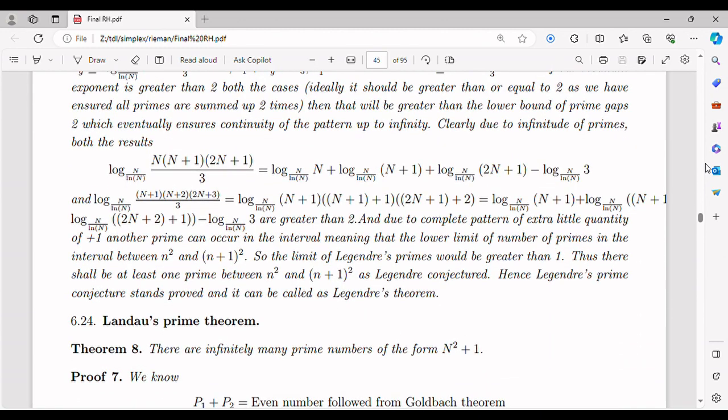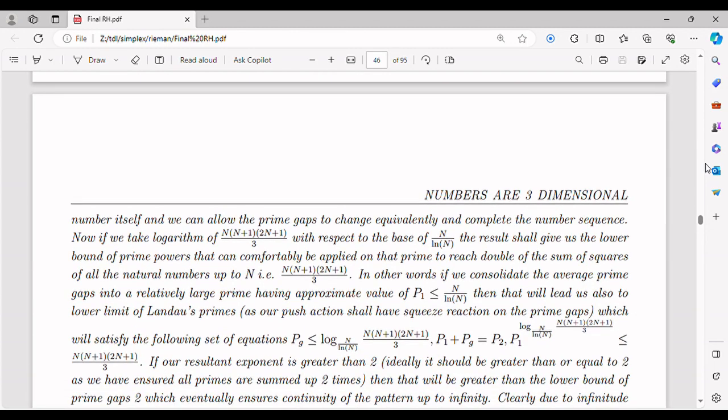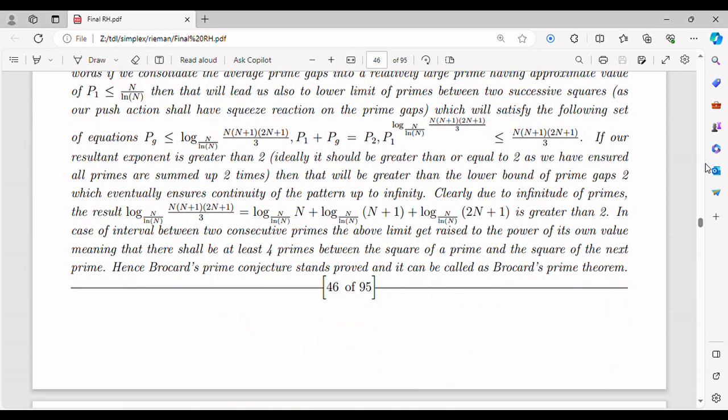Dark energy refers to the hypothetical form of energy that is believed to be responsible for the observed accelerated expansion of the universe. Its nature and properties are not yet well understood, making it a subject of ongoing scientific investigation. Just like the critical line of zeta function is responsible for infinitude of primes and therefore the number system, the dark energy also gets all its energy from the power of the number line. Even though the universe may be infinite both spatially and temporally, it works the same way.